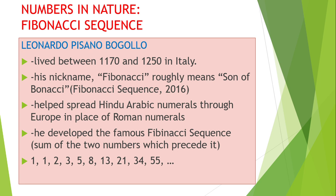This will be the continuation of our lecture on numbers in nature in terms of Fibonacci sequence. Leonardo Pisano of Bugollo lived between 1170 and 1250 in Italy. His nickname is Fibonacci, which roughly means son of Bonacci. He helped spread the Hindu-Arabic numerals through Europe in place of Roman numerals. He developed the famous Fibonacci sequence: 1, 1, 2, 3, 5, 8, 13, 21, 34, 55.